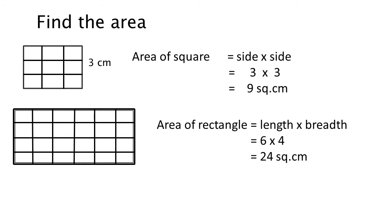Area of rectangle is equal to length into breadth. Length is 6 centimeter and breadth is 4 centimeter. 6 into 4 — how much? 24 square centimeter is the area of the rectangle, while area of square is 9 square centimeter. In this way, we can find out the area of any shape.